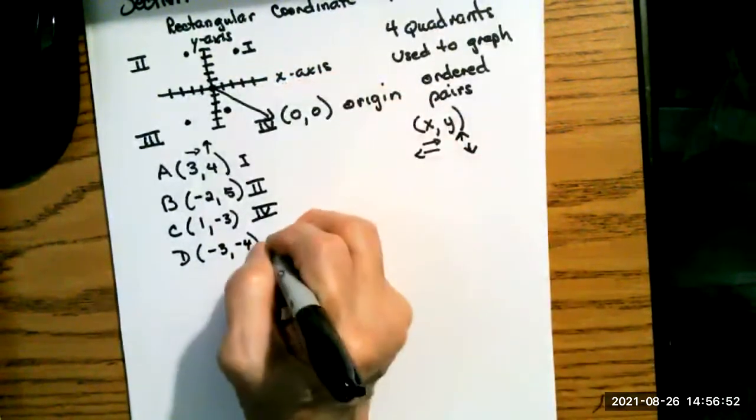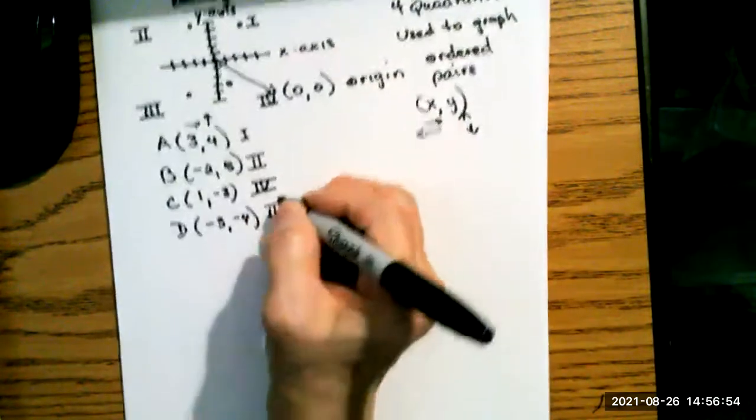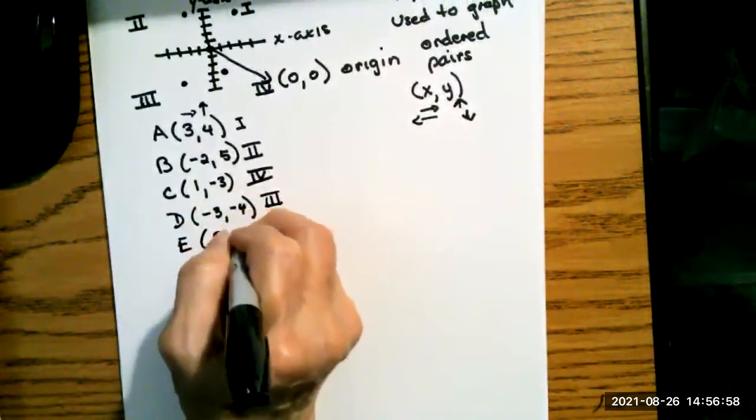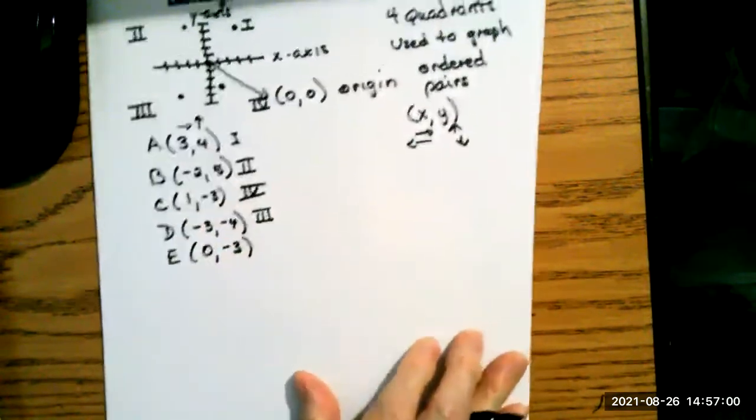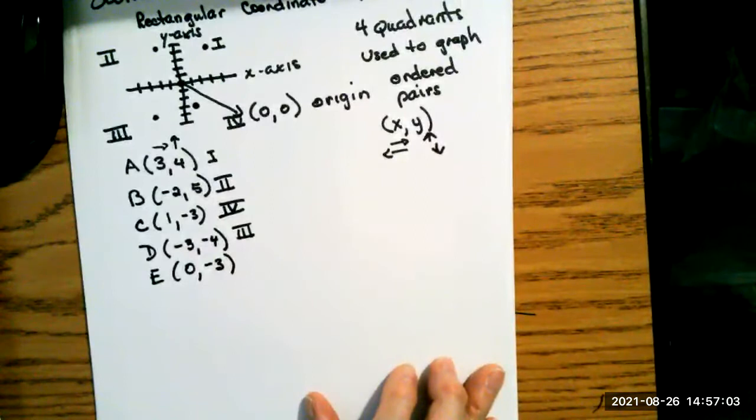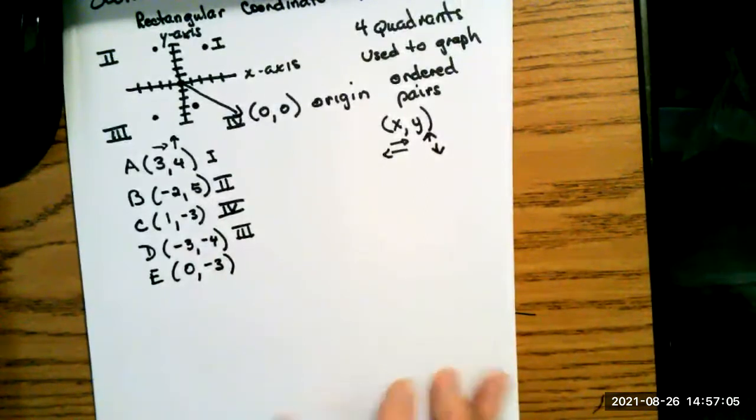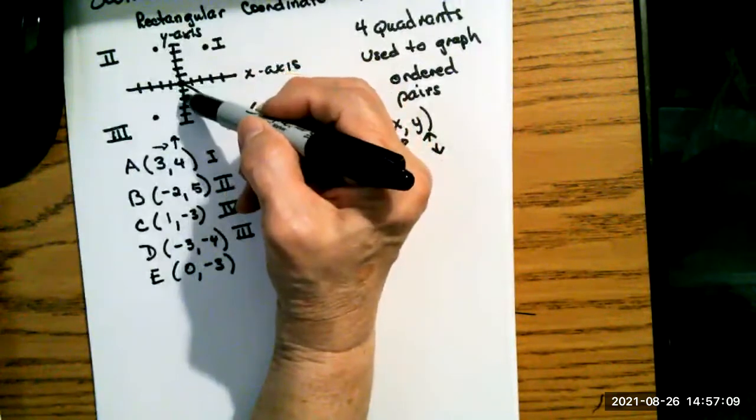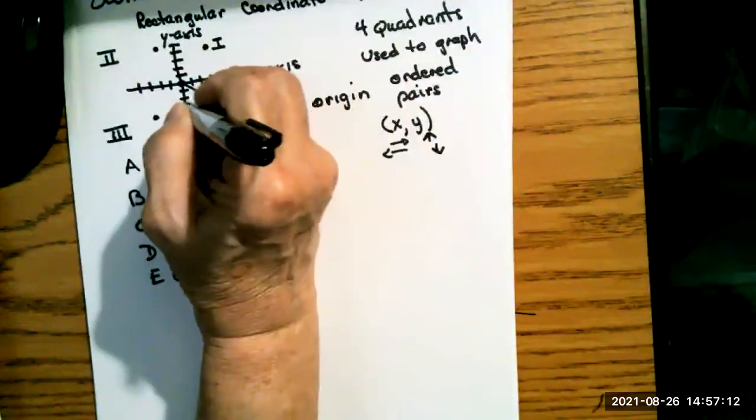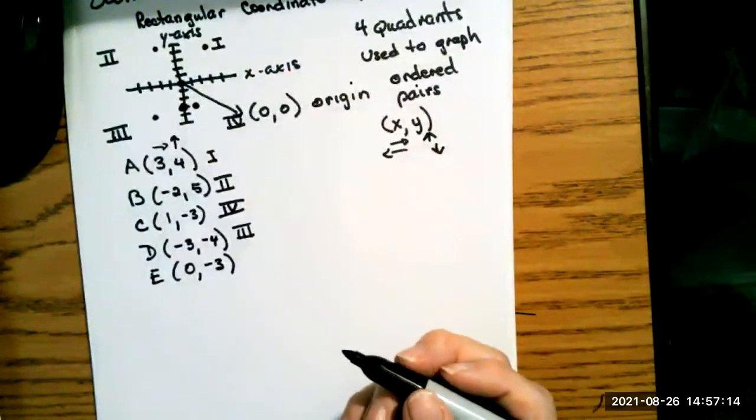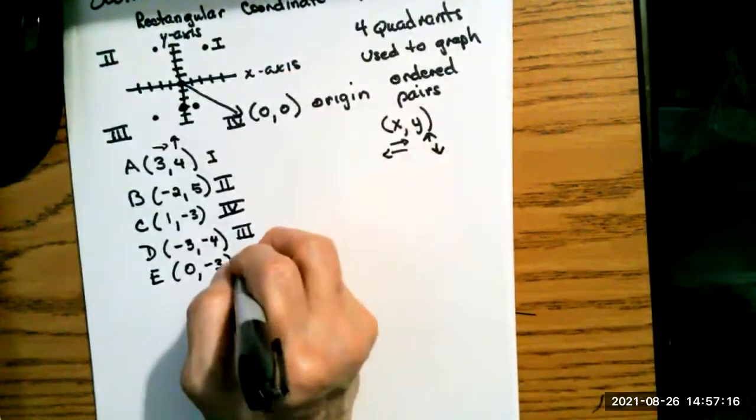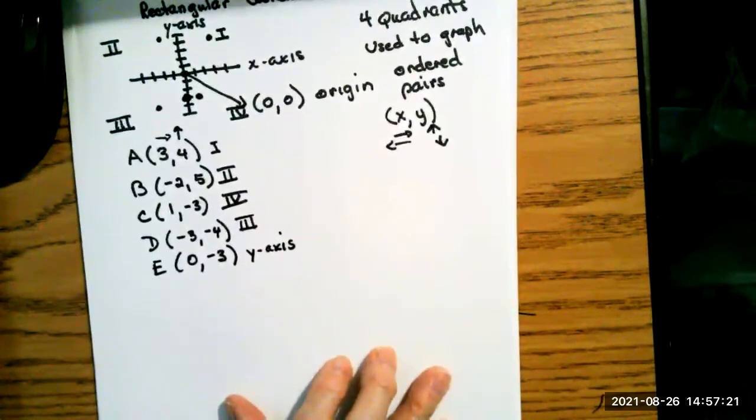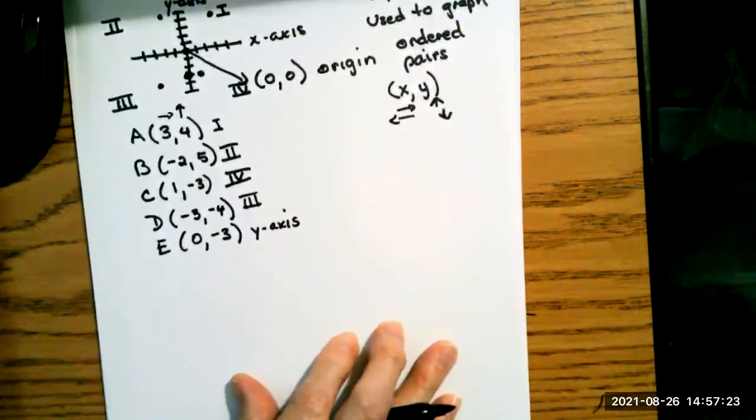When you get a point like E, which is zero, negative three, that point is not in a quadrant, it's on an axis. So let's see where that goes. Zero over and then three down would put us right here. And you can see that's not in a quadrant anywhere. That's on the y-axis, and one of those kinds of problems will be in your homework.